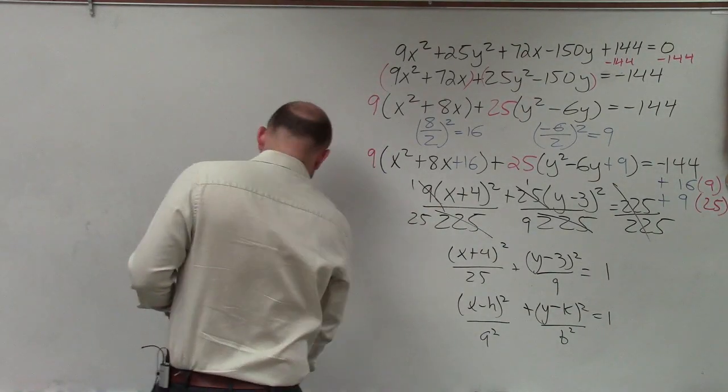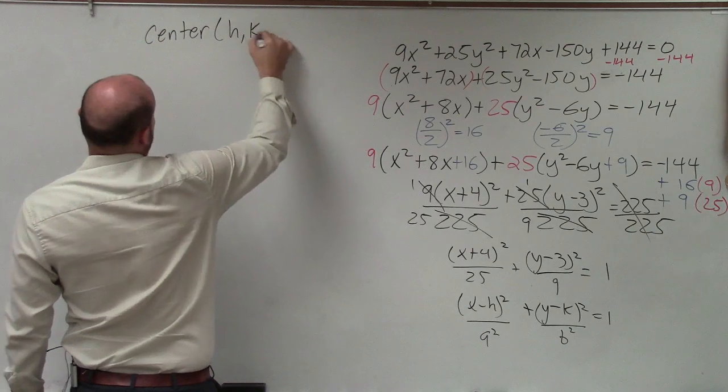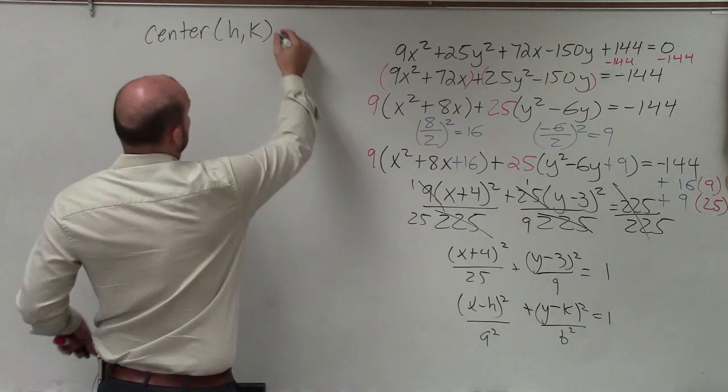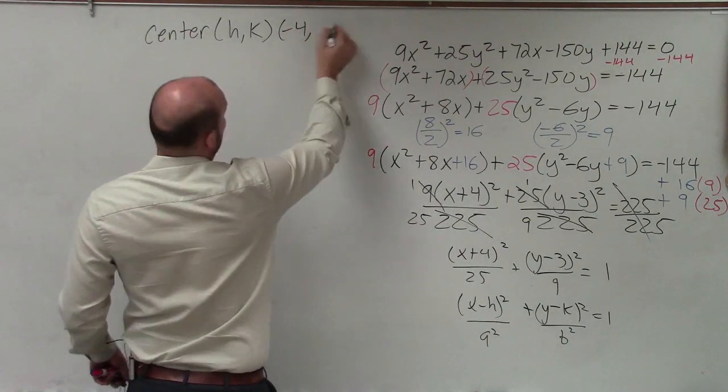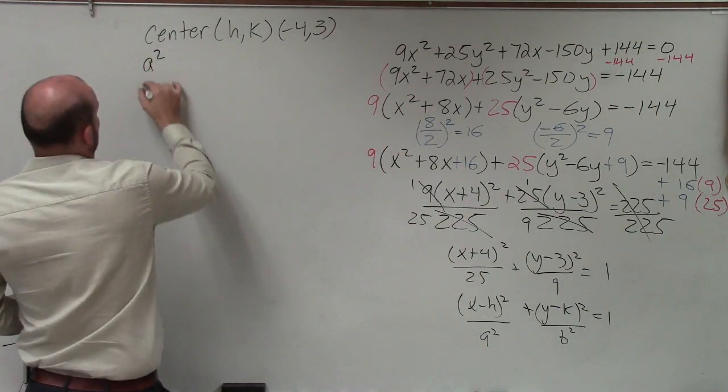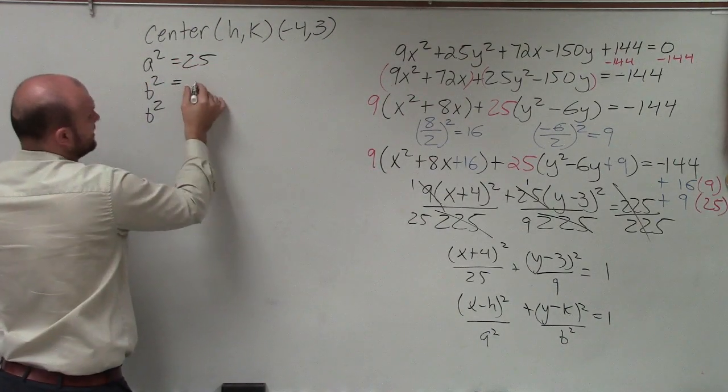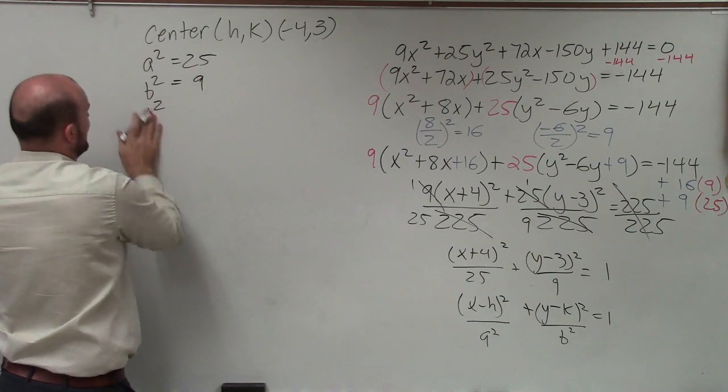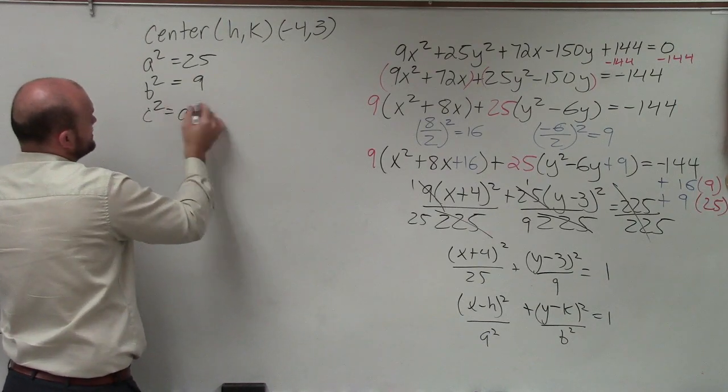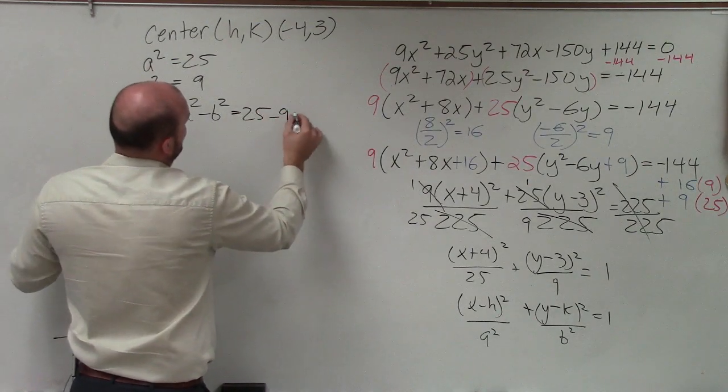Now let's get into what information do we need to know to graph. First thing I need to know is the center. The center is in the form of h comma k. It's opposite of h, opposite of k. So in this case, my center is (-4, 3). It's the opposite of your h and your k. The next thing is I need to figure out what is a², what is b², and what is c². Well, a² is 25, b² is 9. And c² we don't have anything for, but there is a relationship for c² which is a² - b², which is equal to 25 - 9, which is equal to 16.